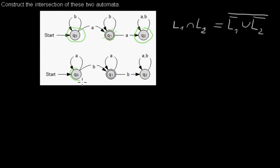For the second automaton again, this will be a final state, this won't be a final state anymore, and this will be a final state. Now I have the complements of the two automaton.